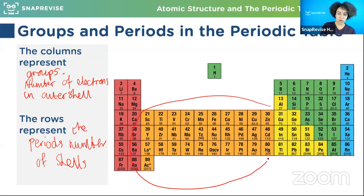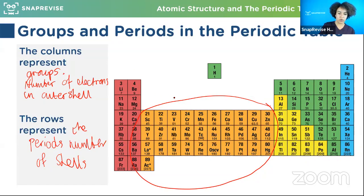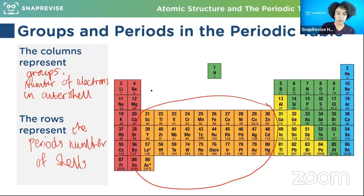We've got this big orange bit in the middle and that is not included in our groups - we only have eight groups. What's that big orange bit? The transition metals. You need to remember that those aren't part of the grouping system.